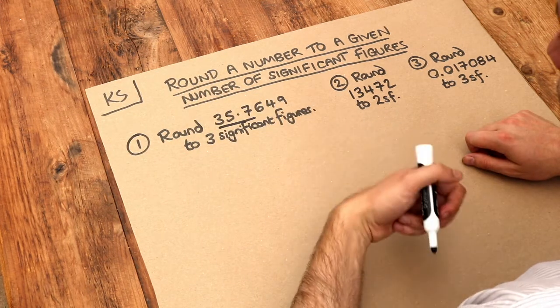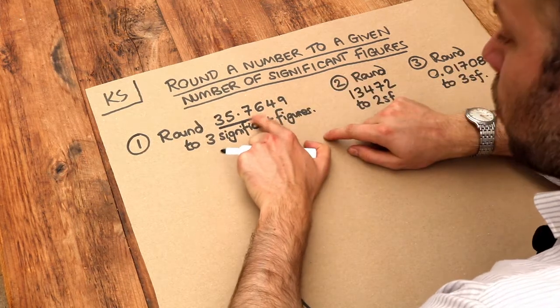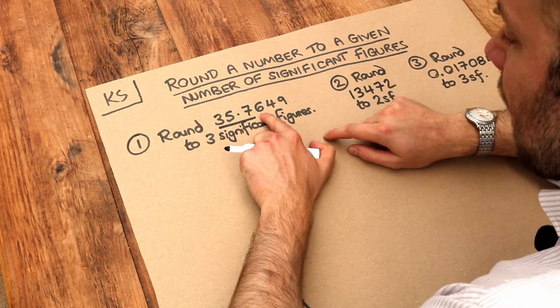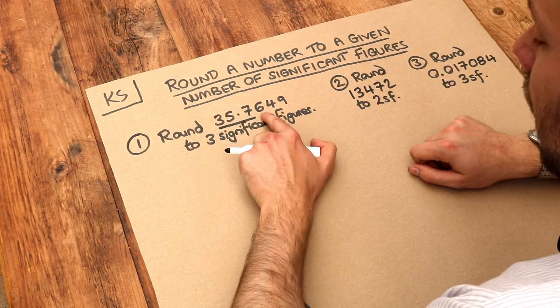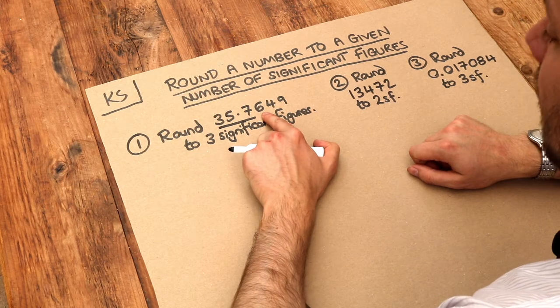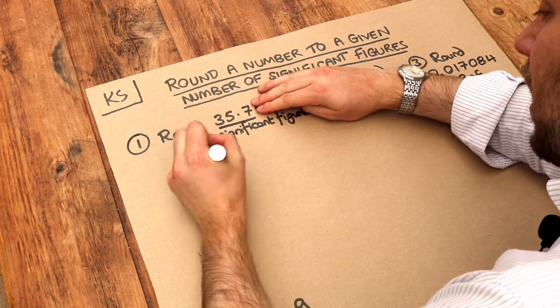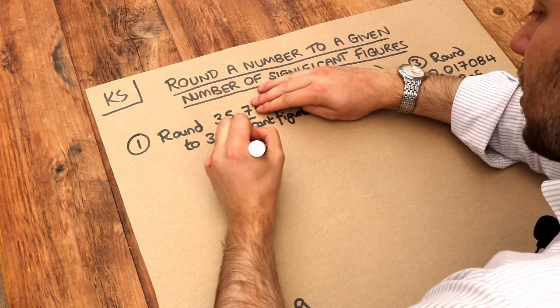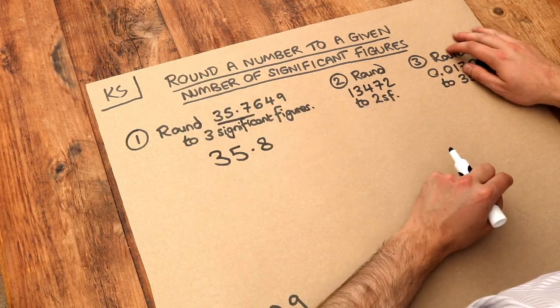Now what we did with rounding to decimal places is that we looked at the digit just after what you'd underlined. So this is 6. Now if this is 5 or greater, this is going to round up. And if it's not, this stays the same. Now is this digit 5 or greater? Yes it is. So this is going to go up to 8. And we discard the rest. So we're going to get 35.8. And that is this number to three significant figures.